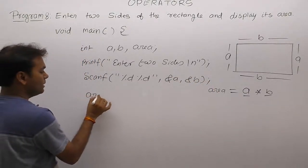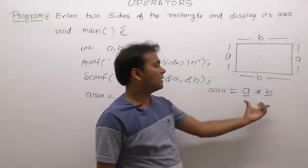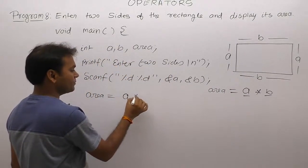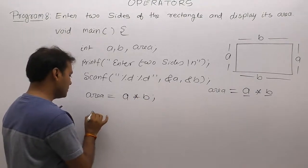Next one. Area equals to simply. What is the area. Simply A multiply by B. Is multiplying these sides. A multiply by B.